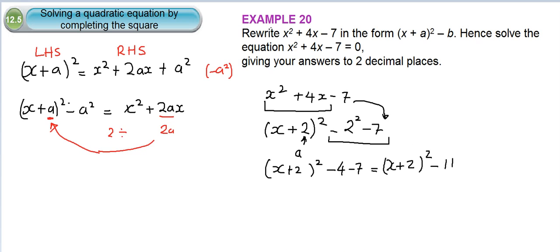So we have answered the first part. This looks exactly like what we have been asked to do, which is x plus a squared minus b. So in this case, x plus a squared is x plus 2 and our b is minus 11.